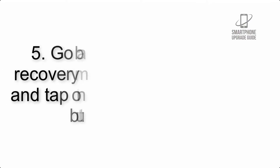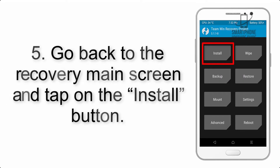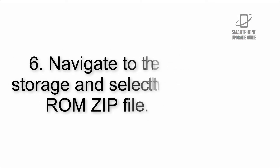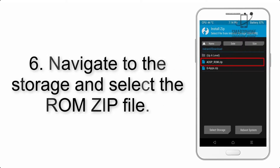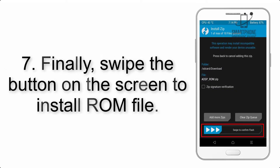Step 4: Swipe the button to wipe the device. Step 5: Go back to the recovery main screen and tap on the Install button. Step 6: Navigate to the storage and select the ROM zip file.